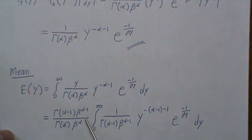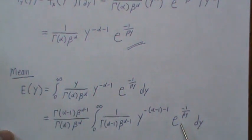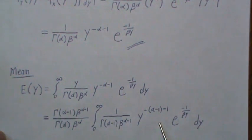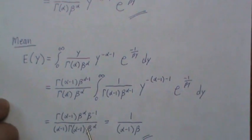So if we multiply and divide by the same constant, we do that because then this becomes an inverse gamma distribution again with parameter alpha minus 1 and beta. So this integrates to 1, and we're left with this out front.